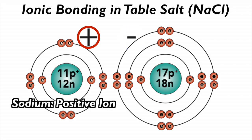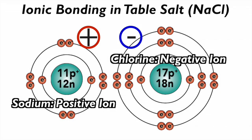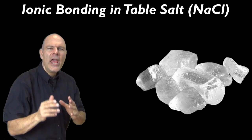The opposite is true for chlorine. It gained an electron, and now has 18 electrons and 17 protons. This gives chlorine an overall charge of minus one. Chlorine is now a negatively charged ion. The difference in charges is the essence of the bond between sodium and chlorine. The sodium, with its positive charge, will stick to the chlorine, with its negative charge, just like the opposite poles of a magnet attract each other. This type of bond, where atoms trade electrons creating charged particles that stick to one another because of their opposite charges, is called an ionic bond.